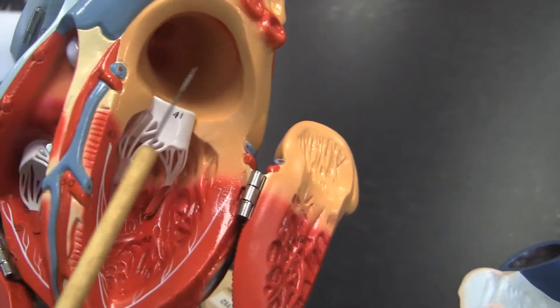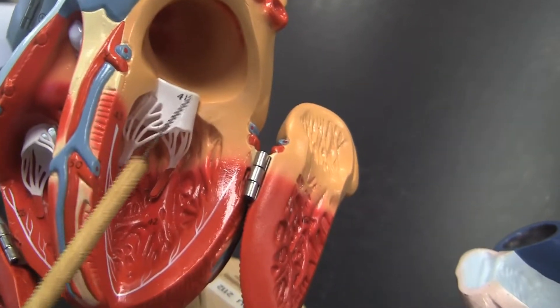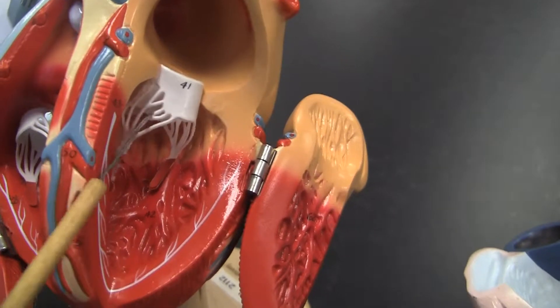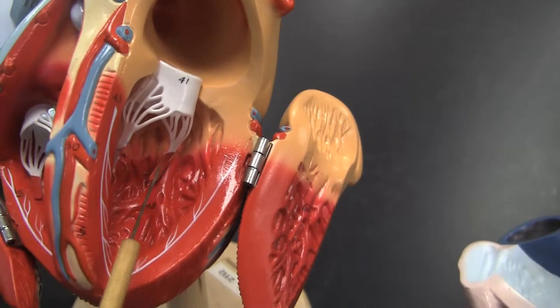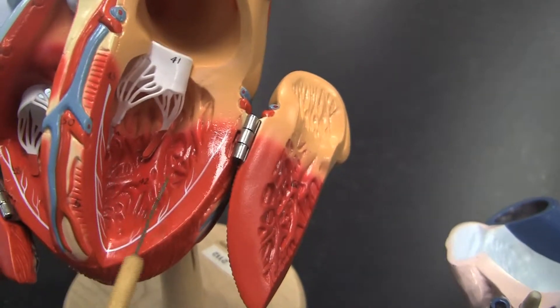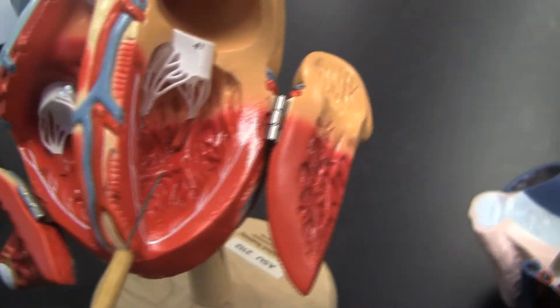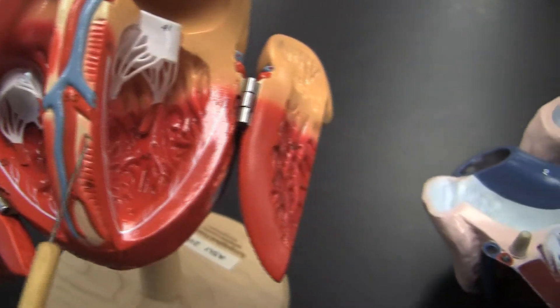Also got pectinate muscles here. Going to go down into the mitral or bicuspid valve into the chordae tendineae. We've got papillary muscles also here, trabeculae carneae also. No moderator band in the left ventricle. The left ventricle is thicker as you can see the walls.